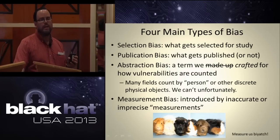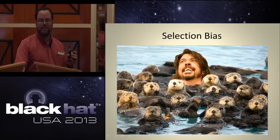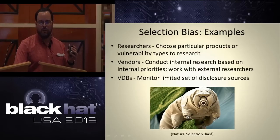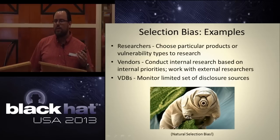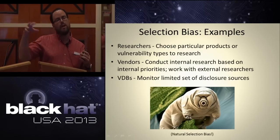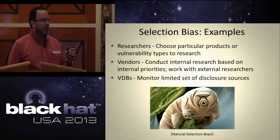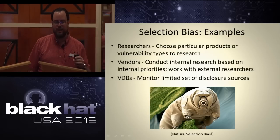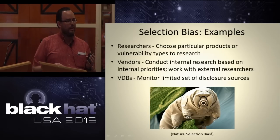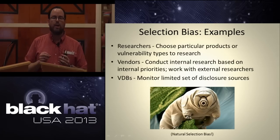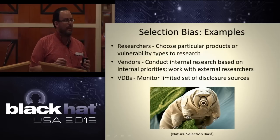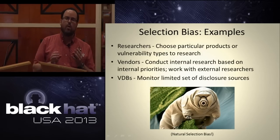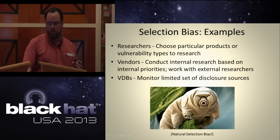Let's get into selection bias — what do you choose for your study? In the vulnerability research context, researchers might choose to focus on certain products or only look for a couple of different vulnerability types. That's a pretty significant bias just on the researcher side. For vendors, they might only concentrate on certain issues or certain parts of their software based on internal priorities. For vulnerability databases, we cannot scrape the entire internet — although Jericho certainly tries — so we have to work with a narrower set of sources, which in and of itself imposes a bias.